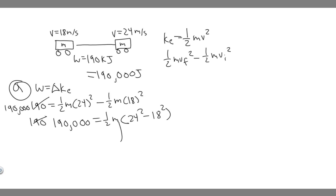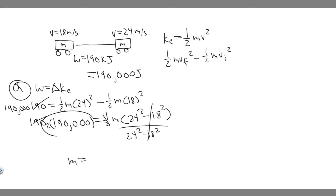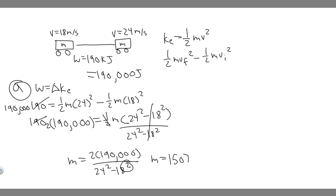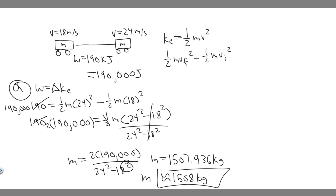Now, solving for m, which is the mass, we multiply both sides by 2 and then divide by (24 squared minus 18 squared). So mass equals 2 times 190,000 divided by (24 squared minus 18 squared). Plugging this in: 2 times 190,000 divided by (24 squared minus 18 squared) gives a mass of 1,507.936 kilograms. Rounding, the mass is approximately 1,508 kg. Make sure you round however your teacher wants, but essentially the mass is about 1,508 kilograms. That's your answer to Part A.